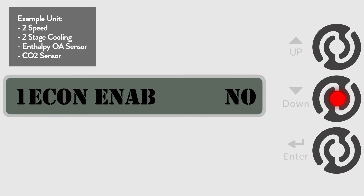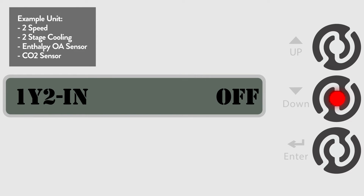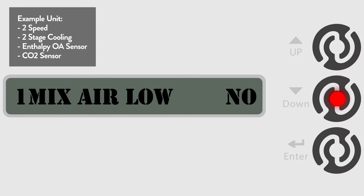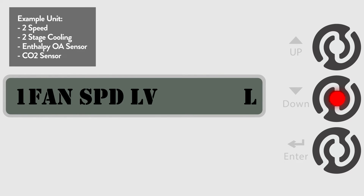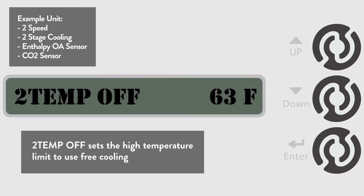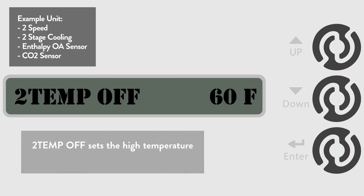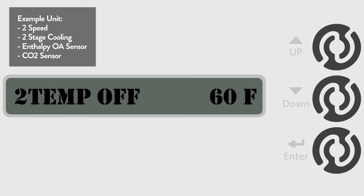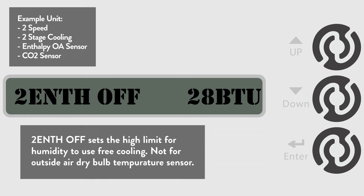We are using temperature and humidity for the outside air sensor, so first let's go to the 2TEMP off menu. This sets the high temperature limit where the economizer free cooling is locked out. The default is 63 degrees, but let's change it to 60 degrees for this example. In the 5 configuration state menu, we selected the temperature and humidity or enthalpy outside air sensor, so now we will adjust the humidity setpoint. Go to the 2ENT off menu, which sets the outside air humidity limit where the economizer free cooling is locked out. The default is 28 BTU per pound, but we will change the setting to 25 BTU per pound.